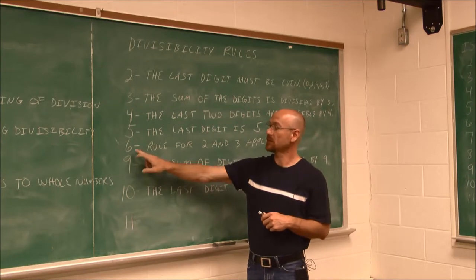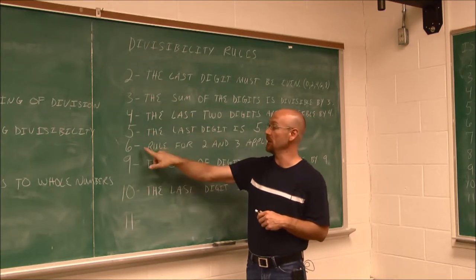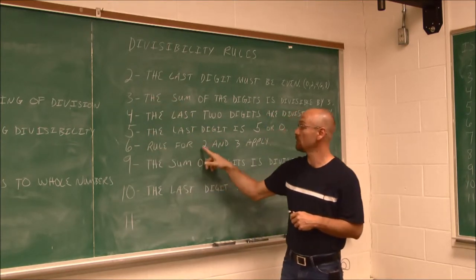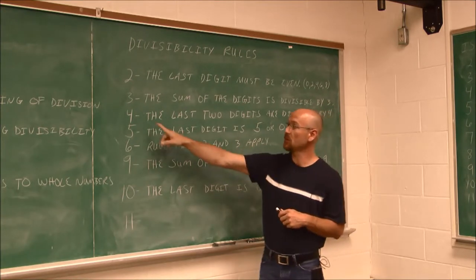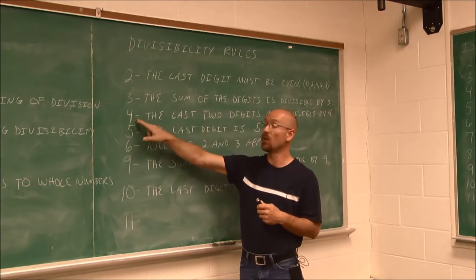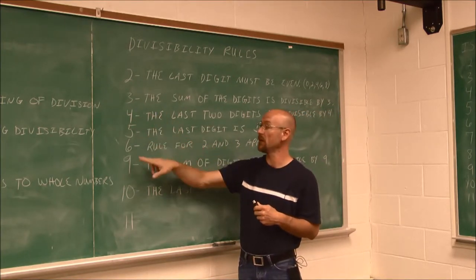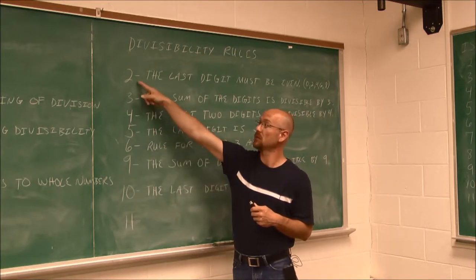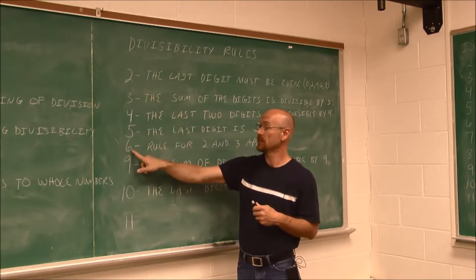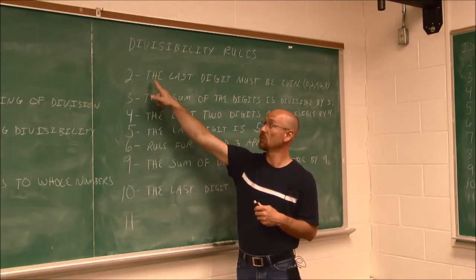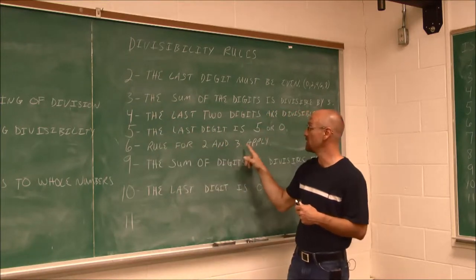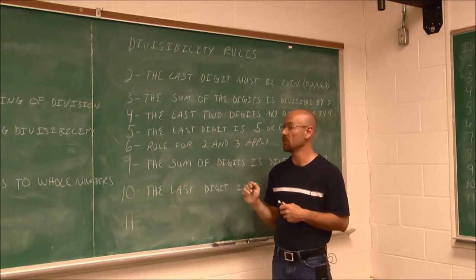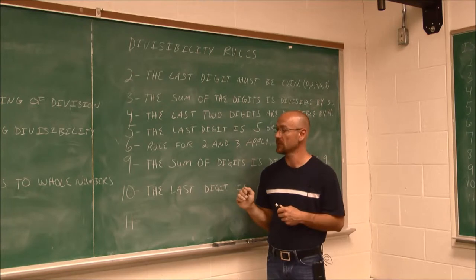For 6, it's actually a combination of 2 and 3 — the rules for both 2 and 3 have to apply. Just like 4 would be 2 twice, 6 is the product of 2 times 3. Since 6 follows both of these rules, we just apply both rules to determine if a number is divisible by 6.